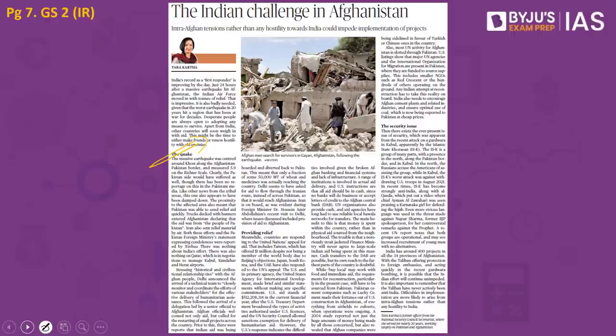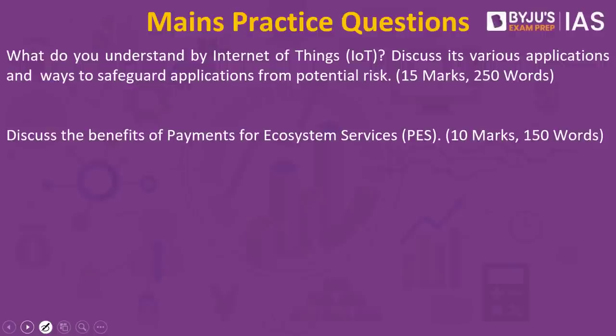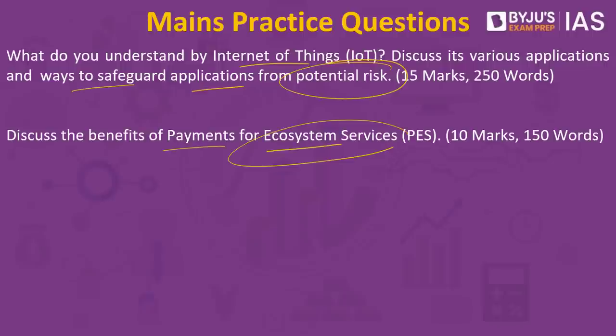Now let's look at the main practice questions: What do you understand by Internet of Things? Discuss its various applications and ways to safeguard applications from potential risks. Discuss the benefits of payments for ecosystem services. Please write all your answers in the comment section, peer review, and give positive feedback to your friends' answers. This is it for today. Thank you for watching. All the best.